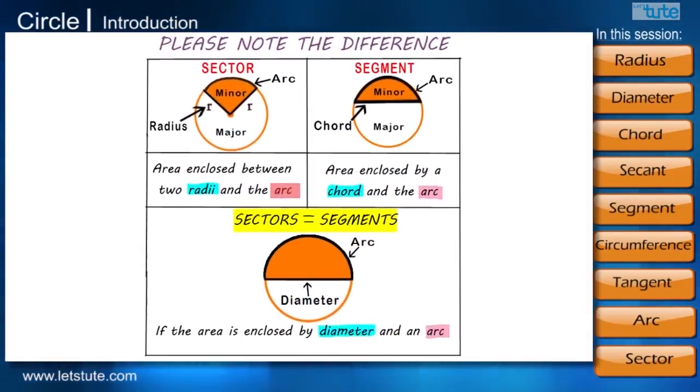Kindly note the difference between sectors and segments. Sectors and segments both are bounded by an arc. But the difference is that sectors are enclosed by two radii and segments are enclosed by a chord. And when that chord is a diameter, sectors are equal to segments.